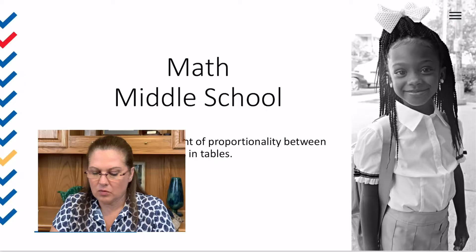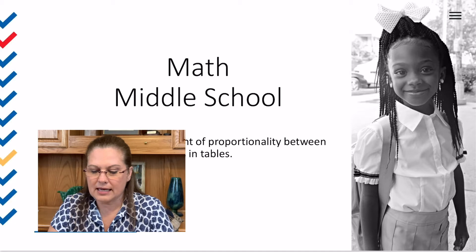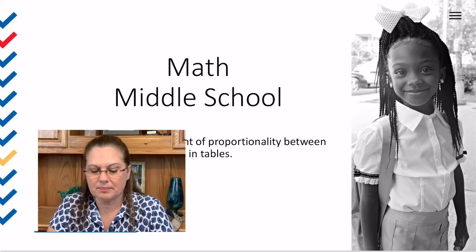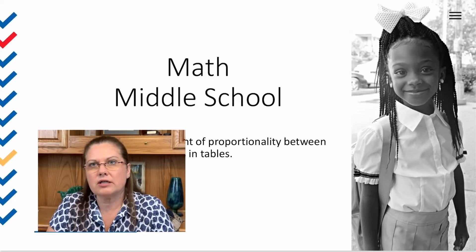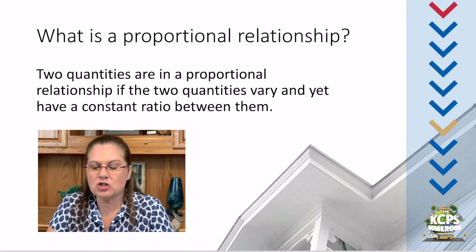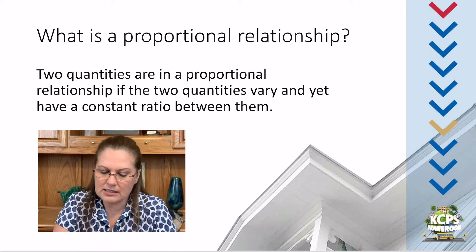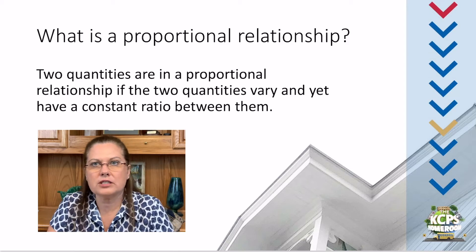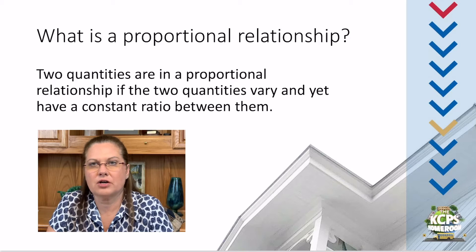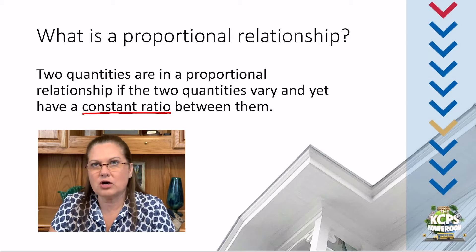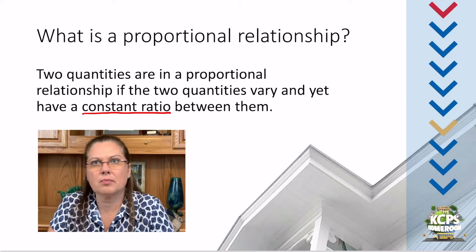Before we really talk about constant proportionality, we need to understand what is a proportional relationship. Two quantities are in a proportional relationship when the two quantities vary and yet have a constant ratio between them. So what we're going to be looking for today is that constant ratio. And that constant ratio is called our constant of proportionality.